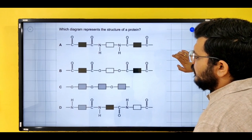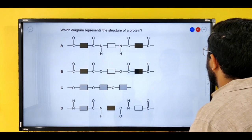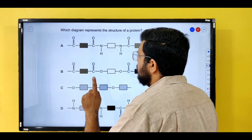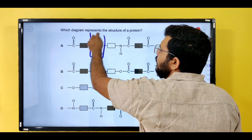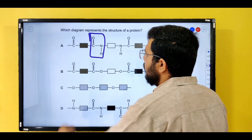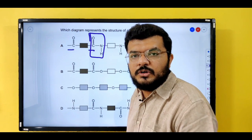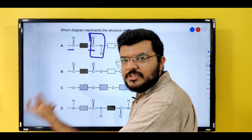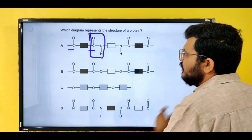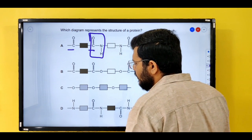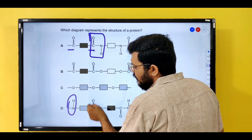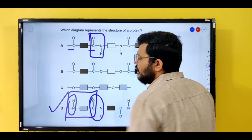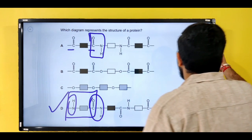Which diagram represents the structure of a protein? Proteins have amide linkage, but you need to check the monomers. On both sides you cannot have C=O only — proteins are made from amino acids, which have amine on one side and carboxylic acid on the other side. So we need to find an amide linkage where the same molecule has both amine and carboxylic acid. The correct answer is option B.